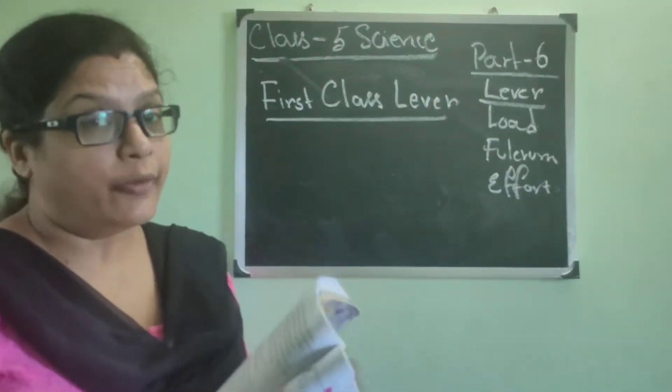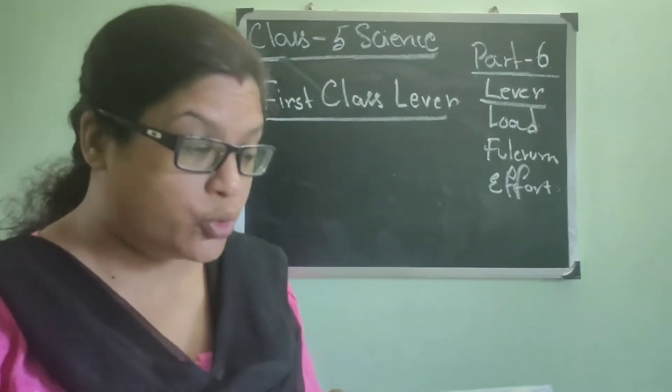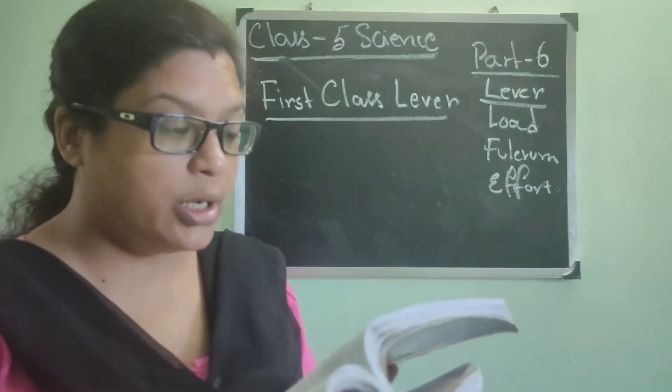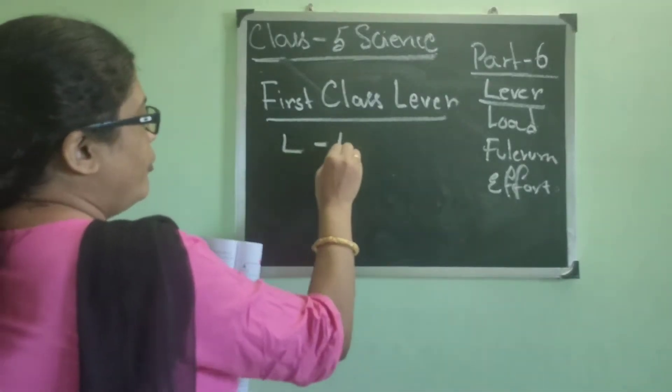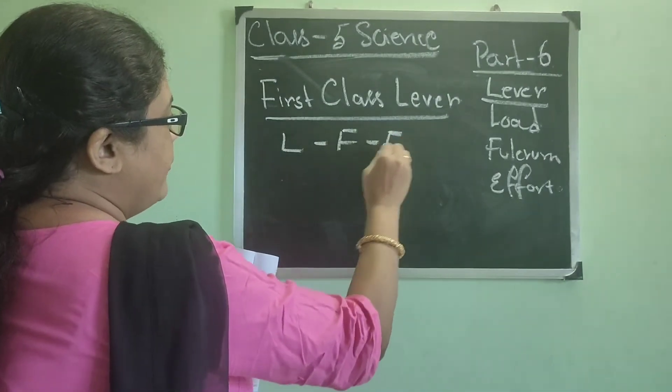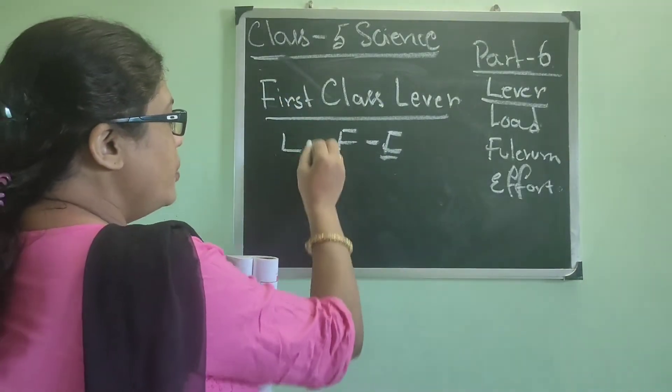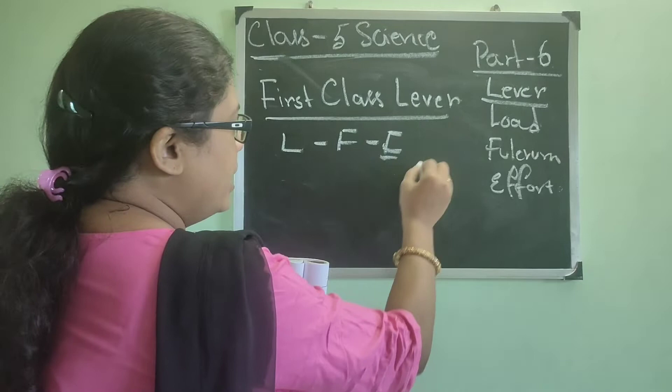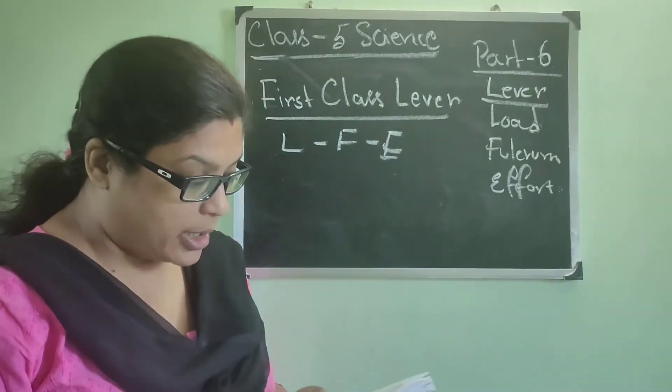So today we are going to start with first class lever. Please go to your book page number 82. First class lever, see what is written: load, fulcrum, and finally effort. So here in case of first class lever, load would be on one side and on the opposite side there will be effort, and the center position will be taken by fulcrum.